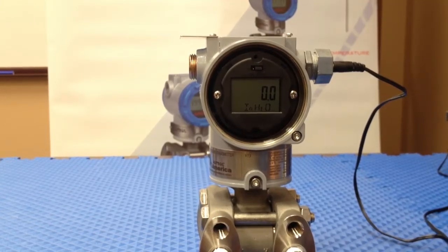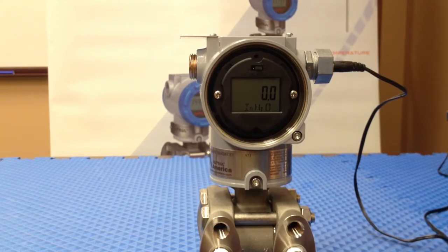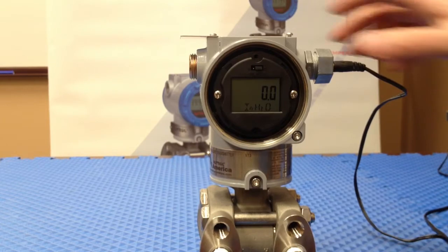In this section we're going to cover setting the upper range value or the span value for the 4 to 20 milliamp signal using the push button interface for the Autrol transmitter with version 7 firmware.